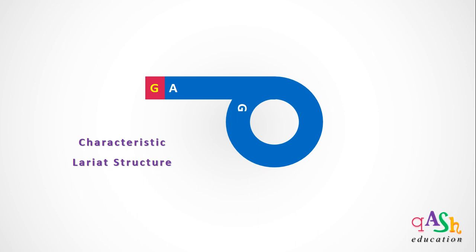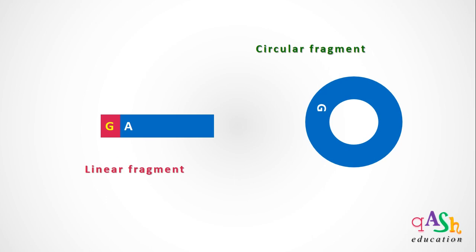This lariat structure is then nicked to generate two types of fragments: a linear fragment and a circular fragment. Both fragments are degraded, and this is how self-splicing introns catalyze their own removal.